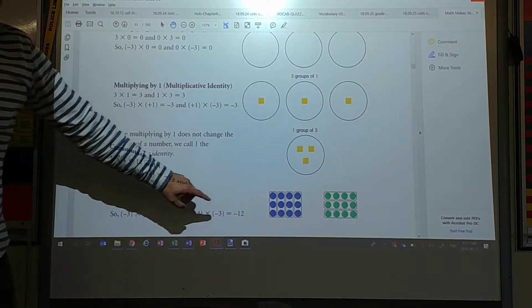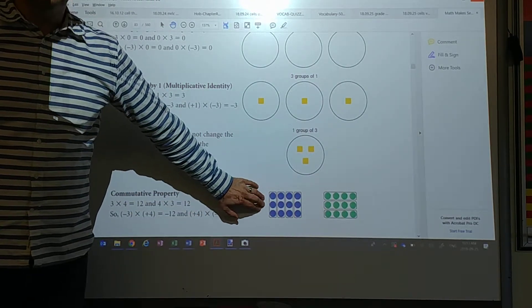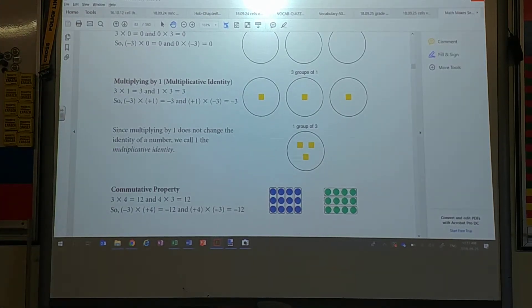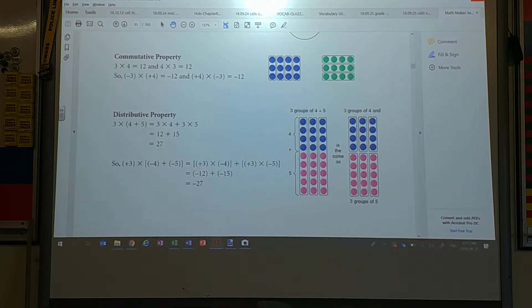And it also shows the commutative property here. There's that word commutative, where it doesn't matter if you look at it as four groups of three or three groups of four. That's the one that we just did on my desk. What time are we at in our video here? Six minutes. Okay. Thank you.